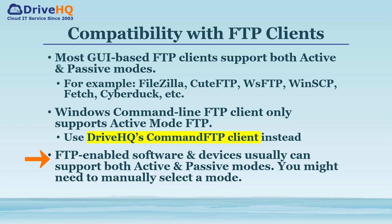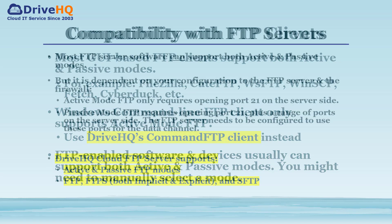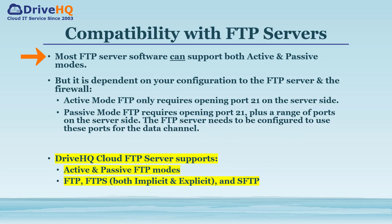FTP-enabled software and devices can usually support both active and passive modes, but it is dependent on your server and firewall configuration. Active mode FTP only requires opening port 21 on the server side. Passive mode FTP requires opening port 21 plus a range of ports on the server side. The FTP server needs to be configured to use these ports for the data channel.